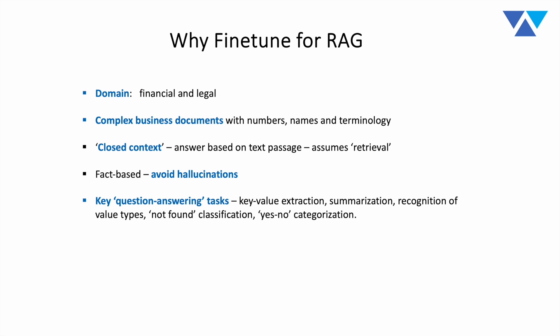We focused on key question answering tasks. For a 7 billion parameter model, to get performance comparable to models 10 or 20 times larger, we focus on a core set of instructions around the key types of question answering tasks most likely to come up in a RAG-based scenario: key value extraction, multiple forms of summarization, recognition of not-found classification, recognition of certain value types, yes/no categorization, and other basic question answering analytics. We also trained the model to give short, consistent answers that can be handled programmatically and fed into automated classification workflows.